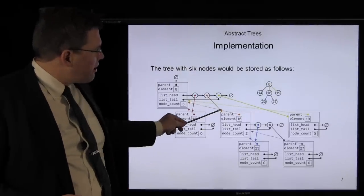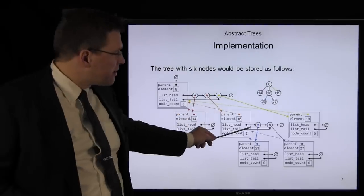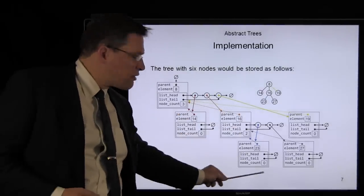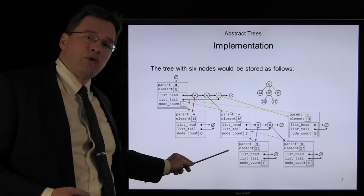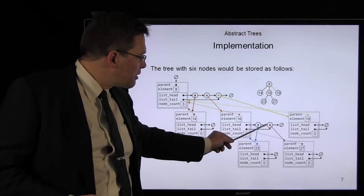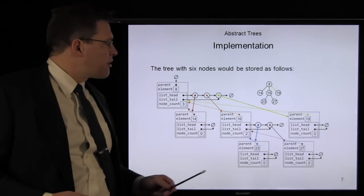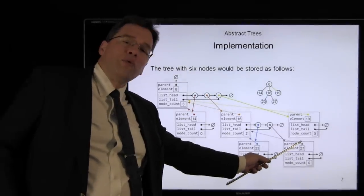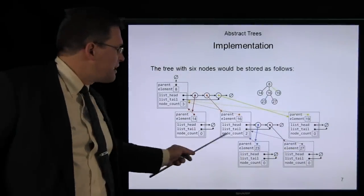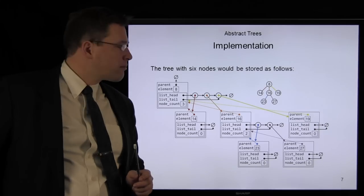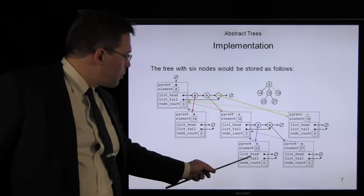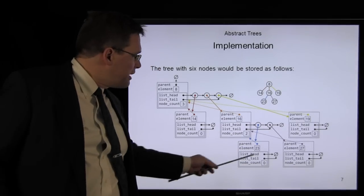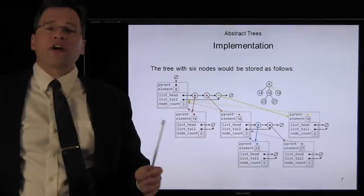Node 16, on the other hand, has two children, so its singly linked list has two nodes within it. The first node stores the address of the node storing 23. The second one stores the address of node 27. Node 27 stores a pointer to node 16, its parent. Nodes 23, 27, and 19 have no children, so each of these three linked lists are empty.